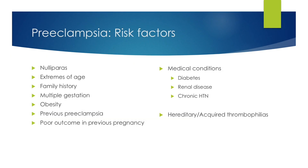The risk factors for preeclampsia include nulliparous women, extremes of age — both teenagers and advanced maternal age — a family history of preeclampsia, multiple gestations, obesity, previous preeclampsia, a poor outcome in a previous pregnancy, and certain medical conditions including diabetes, renal disease, and chronic hypertension. Hereditary and acquired thrombophilias are also risk factors for preeclampsia.